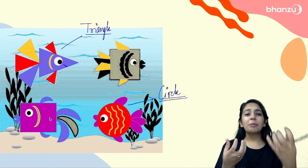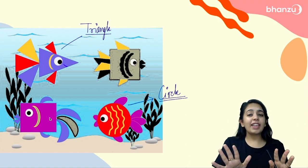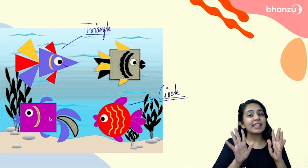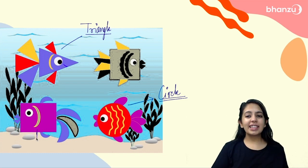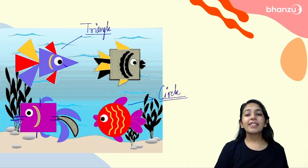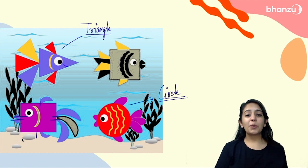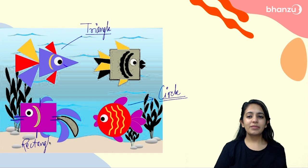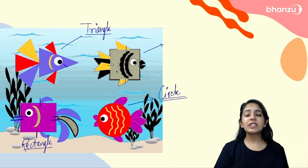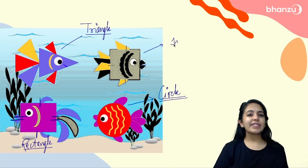Now let's talk about the pink and the yellow fish. Though they both have four sides, they are still different. In the pink one, the opposite sides are the same — the facing sides are equal — so we call such a shape a rectangle. In the yellow fish, if you observe carefully, all four sides are the same, and we call such a shape a square.